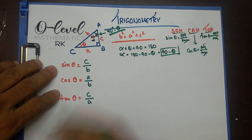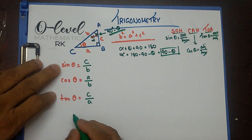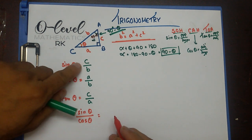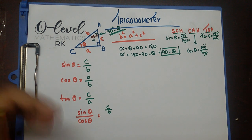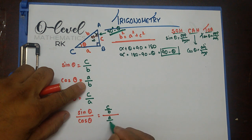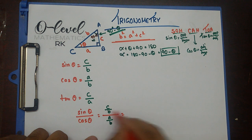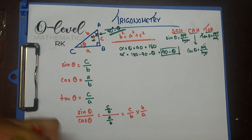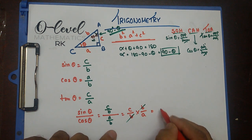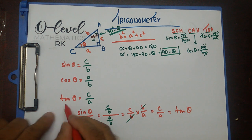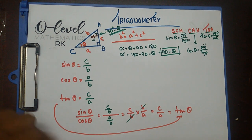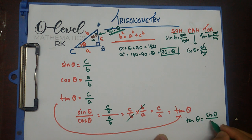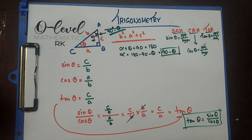I want to explore this further. What if I compute sine theta divided by cosine theta? Sine theta is C over B, and cosine theta is A over B. So C/B divided by A/B equals C/B times B/A, and the B's cancel, giving C over A. And C over A is nothing but tan theta. So we get the formula: tan theta equals sine theta divided by cosine theta.